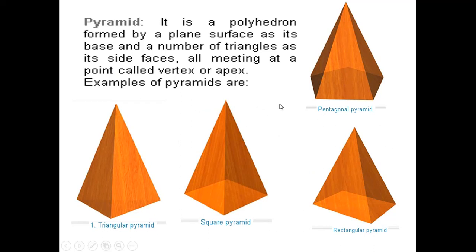So that is what has been explained here — pyramids and different types of pyramids: pentagonal pyramid where the base edge is a pentagon, triangular pyramid, square pyramid, and rectangular pyramid.